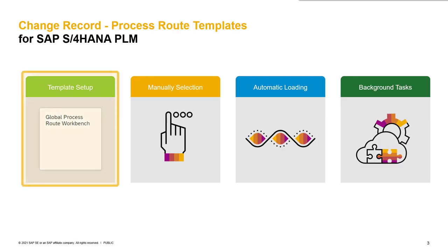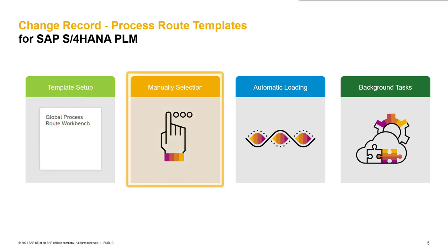In this video, I want to give you an overview of the setup and handling of process route templates in the change record. I will first show you some slides and then jump into the system for a live demo. If you want to use predefined process routes, you need to set up the templates in the global process route workbench app, where you can create new or maintain existing ones.